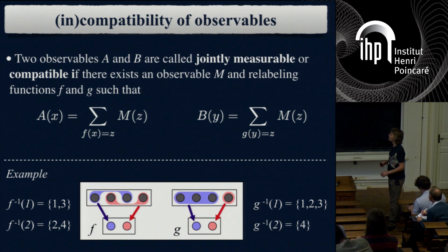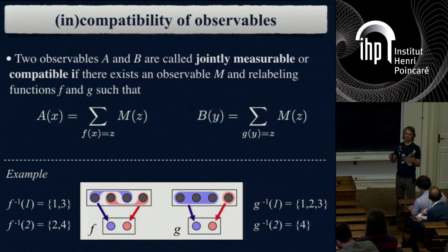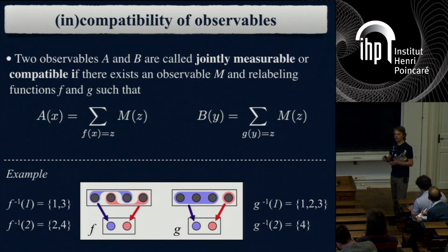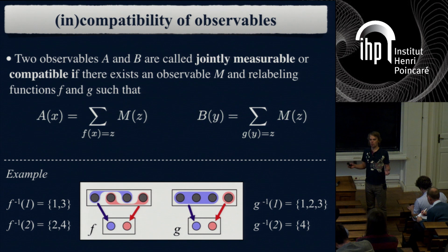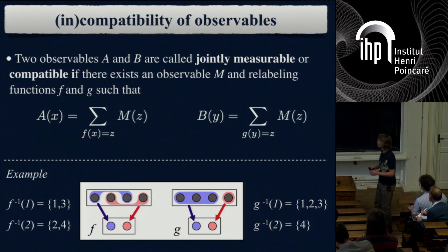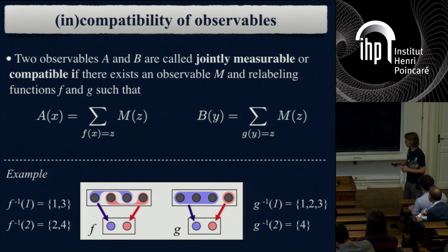If they are not compatible, we call them incompatible. And it is the incompatibility that makes observables quantum. We will come to that soon.